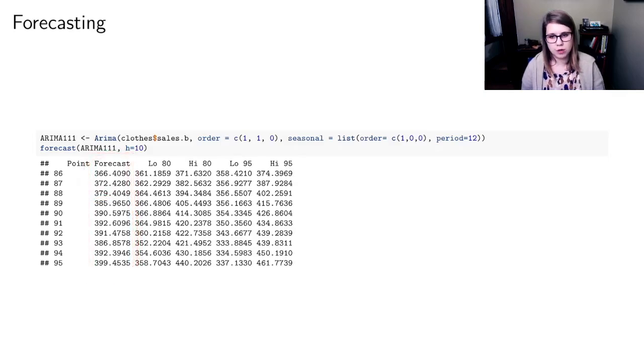But then you also get prediction intervals. So remember, we talked about confidence intervals and prediction intervals earlier in the class. The prediction intervals are always wide. These are going to be wide intervals. And so R gives you an 80% interval, the low and high, and it also gives you a 95% interval, the low and the high.